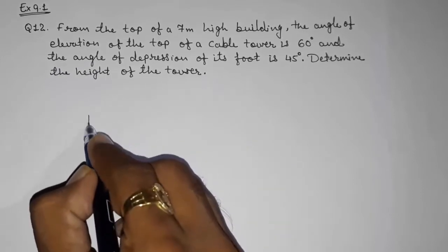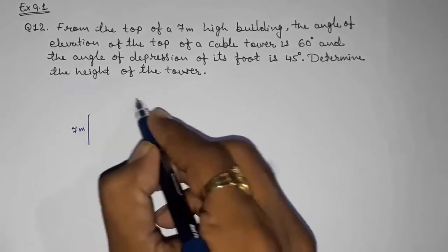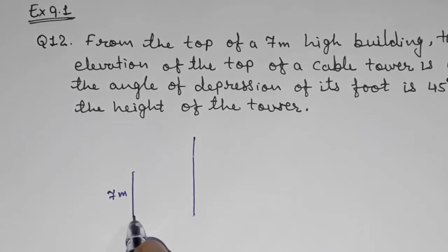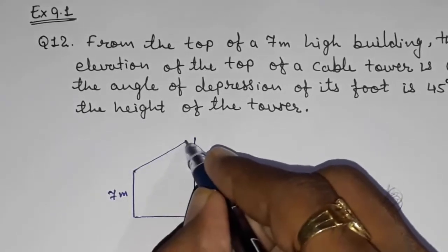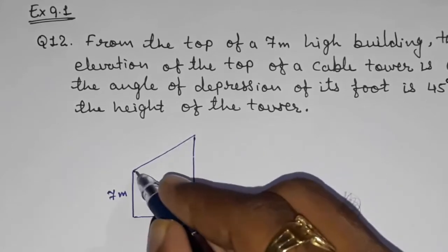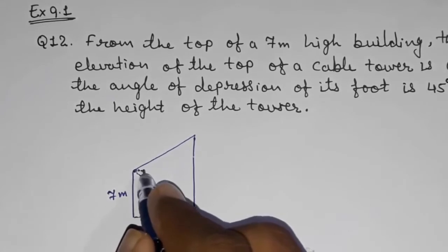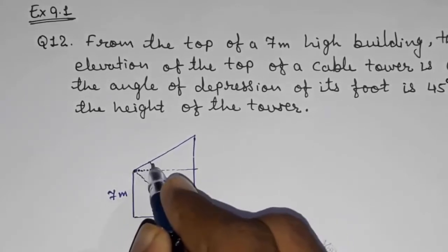They are telling they are having a 7 meter high tower. From the top, they are looking at a cable tower which is a little bit bigger than this because they are telling that it is making angle of elevation also on the top and it is also making angle of depression at the bottom. So there is one imaginary line between this because they are telling angle of elevation.